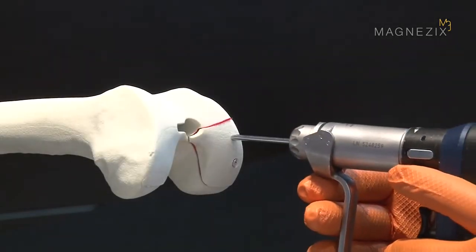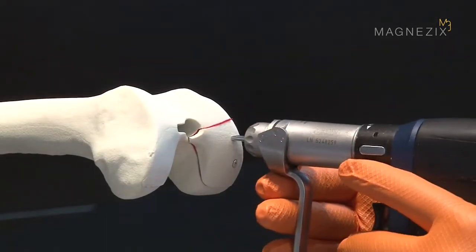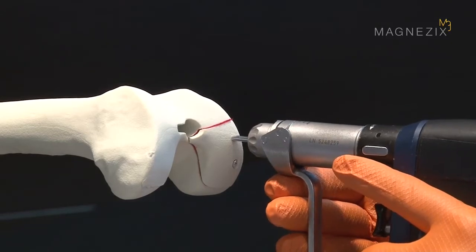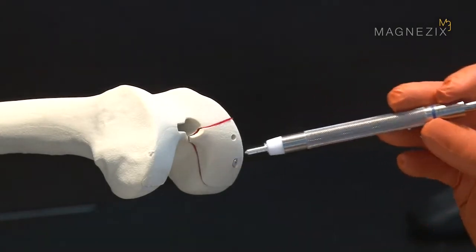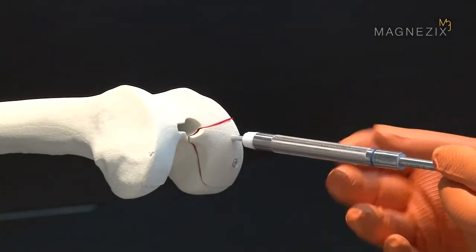Before the second pin is inserted, the reduction wire must be carefully removed with minimum axial pull. The second pin is now inserted in the same way as the first.